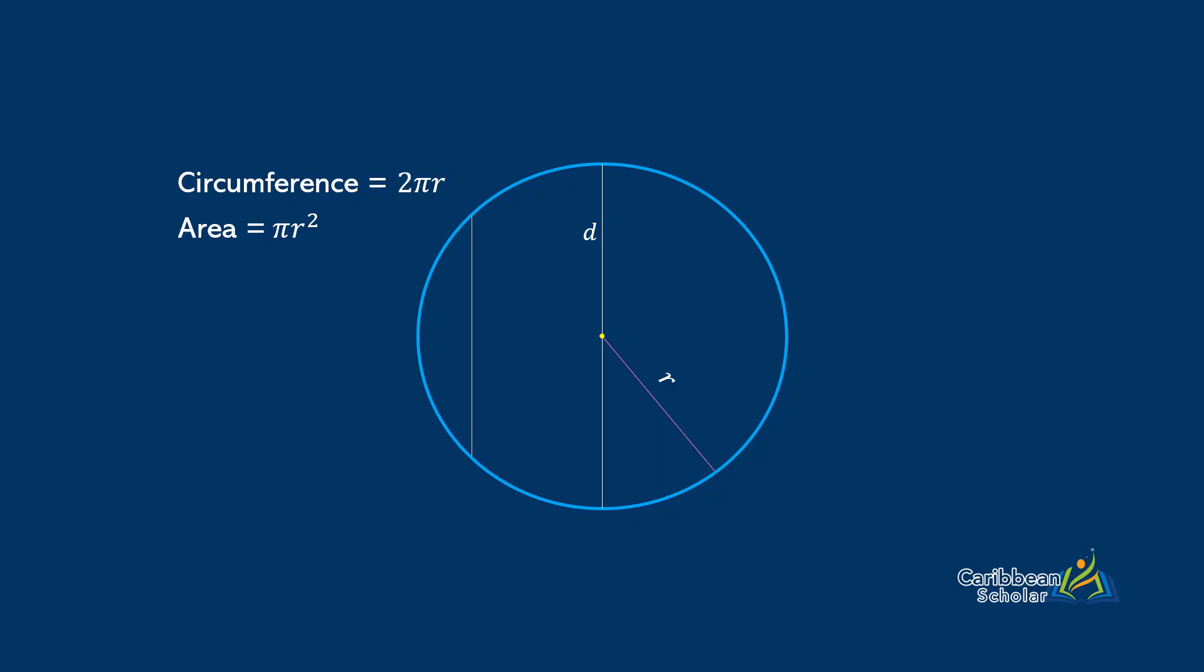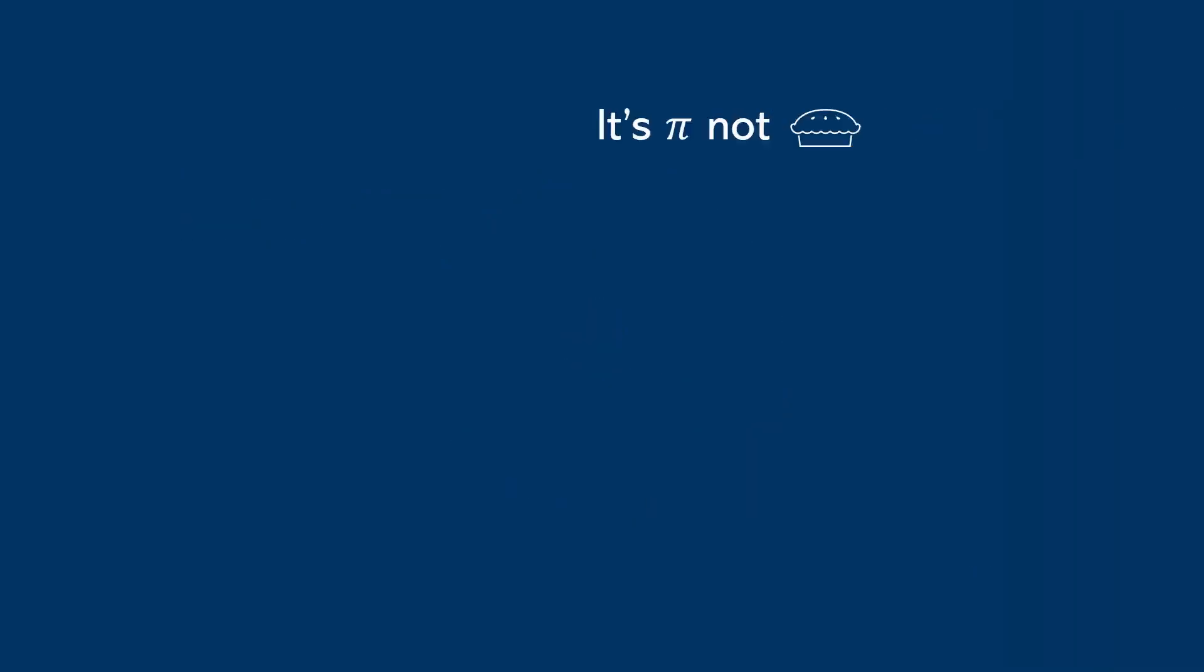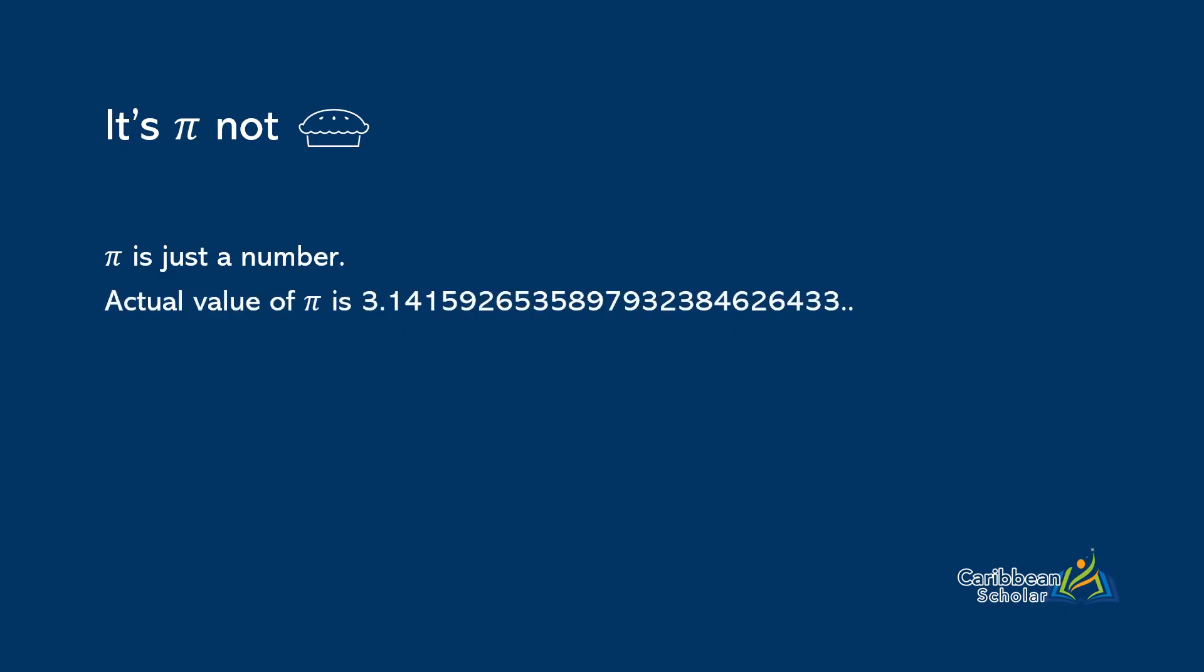But what is pi? Well, pi is just a number. The actual value of pi is 3.141592653 and it goes on forever.